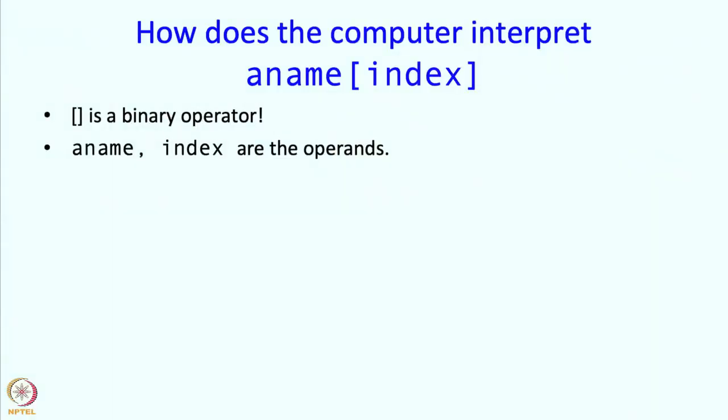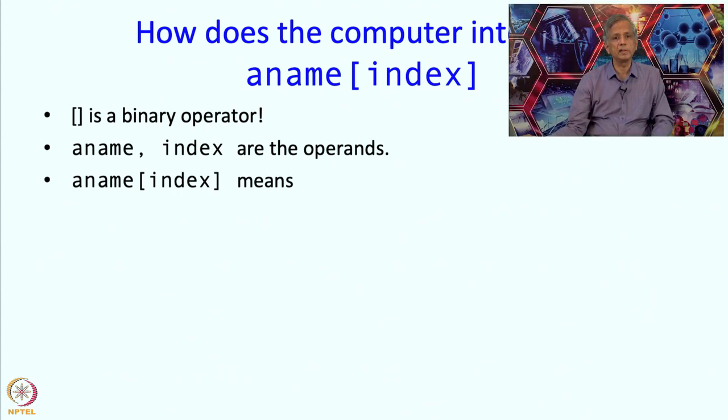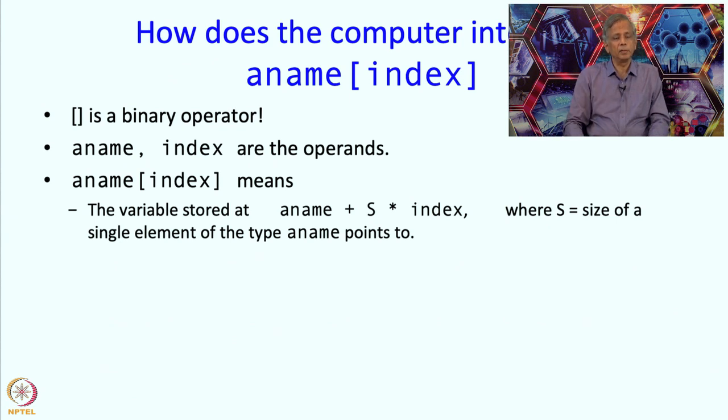So what exactly is the interpretation? First of all, aname and index are the operands of the operator, and aname of index means the variable which is stored at aname plus s times index, where s is the size of a single element of the type that aname points to.